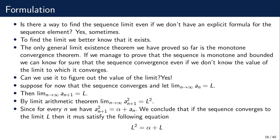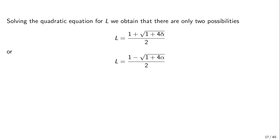Now L satisfies this quadratic equation, and we can solve it. Since alpha is positive there are two solutions, but one solution cannot be a candidate for the limit. If alpha is positive then one plus something greater than one means the square root of that is greater than one, so that candidate would have a negative value and therefore is not a valid positive candidate. Therefore, just by assuming the sequence converges, we conclude that if it converges, it must converge to the positive solution of the quadratic.